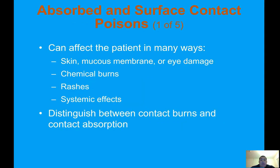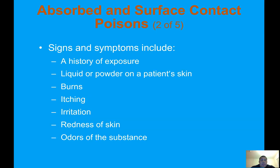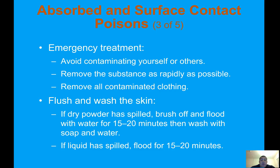Surface contact poisons can affect the patient in many ways: skin, mucous membrane, or eye damage; chemical burns; rashes; and systemic effects. Distinguish between contact burns and contact absorption. Signs and symptoms include a history of exposure, liquid or powder on the patient's skin, burns, itching, irritation, redness, and skin odors. Emergency treatment: avoid contaminating yourself or others, remove the substance as rapidly as possible, remove all contaminated clothing, and flush and wash the skin.